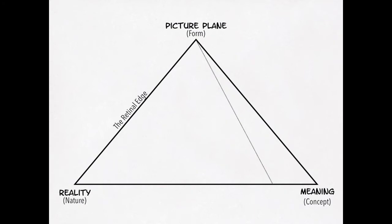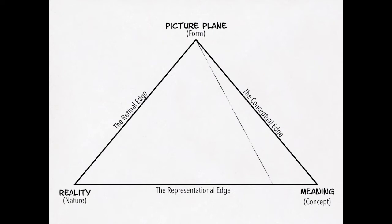These edges are related to the kinds of ways that these points work. Reality, or nature, and form — images trying to express either of those — are deeply visual. Therefore, he calls it the retinal edge. Picture plane and meaning, or form and concept, are really heady, brainy ideas, so McCloud calls the line connecting those two the conceptual edge. Finally, he calls the line between reality and meaning, or nature and concept, the representational edge, because both nature and concepts are things the image is trying to represent. The dotted line from McCloud is the line at which pictures can no longer work, and we have to move into language or even more abstract forms of representation.